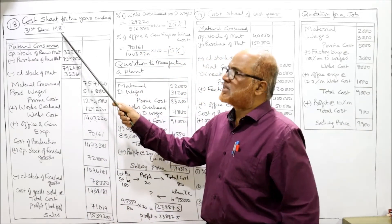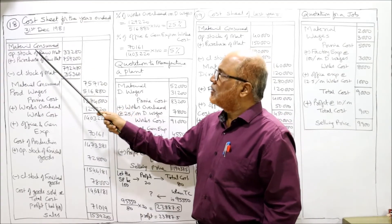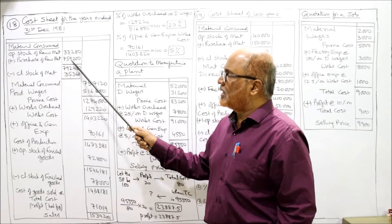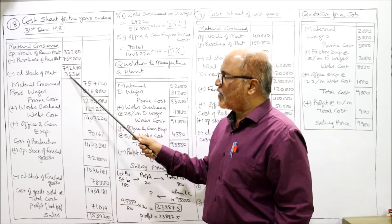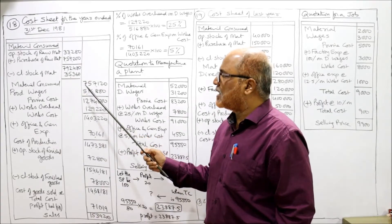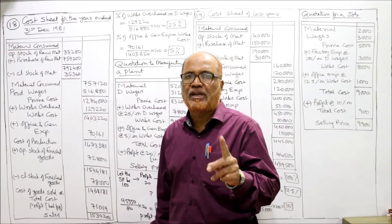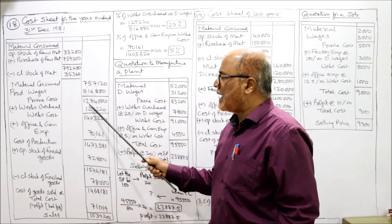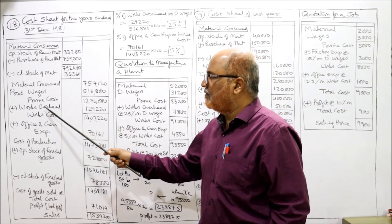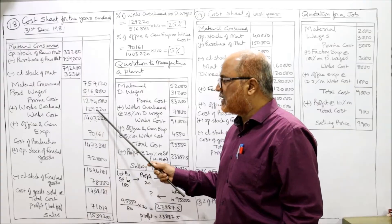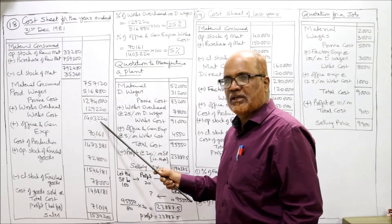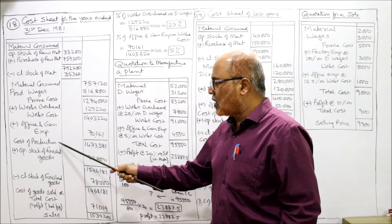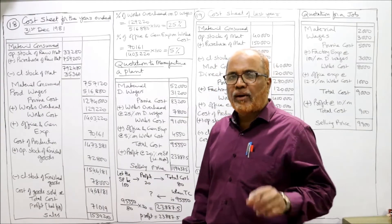Cost sheet for the year 31st December 1981: material consumed — opening stock of raw material 33,280, add purchase of raw material, then less closing stock of raw material 35,360, so material consumed 7,57,120. Productive wages given 5,16,880, prime cost 12,74,000. Works overhead given in the problem 1,29,220, works cost 14,03,220. Then office and general expenses 70,161, so cost of production 14,73,381.